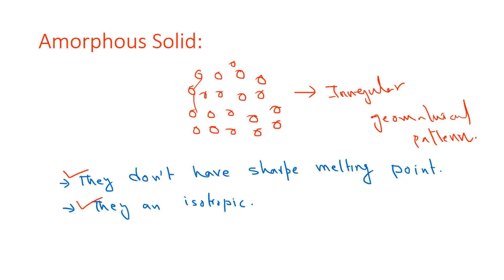So amorphous means if the compound has an irregular geometrical pattern, then we can say this is an amorphous compound. The property is that they don't have a sharp melting point because the bond strengths of different molecules are different. But in case of crystalline solid, the compound has a sharp melting point because all the bond strengths are the same. I think you understand the difference between amorphous and crystalline solid. Thanks for watching my video. Please like and subscribe my channel to get more updates.